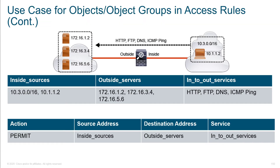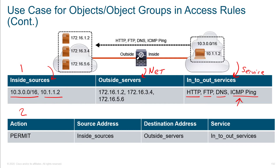We simplified things into two steps: step one is setting up our groups, step two is using our groups within a configuration. We created a group called 'inside sources' which includes a subnet as well as an individual host. Another group called 'outside servers' has three individual sources listed by IP. Last but not least, there's a service group called 'into out service' — we named it something meaningful. We're saying we want to inspect HTTP, FTP, DNS, and ICMP. When we inspect ICMP, we see an echo request go through the firewall and evaluate it — this is called stateful packet inspection.